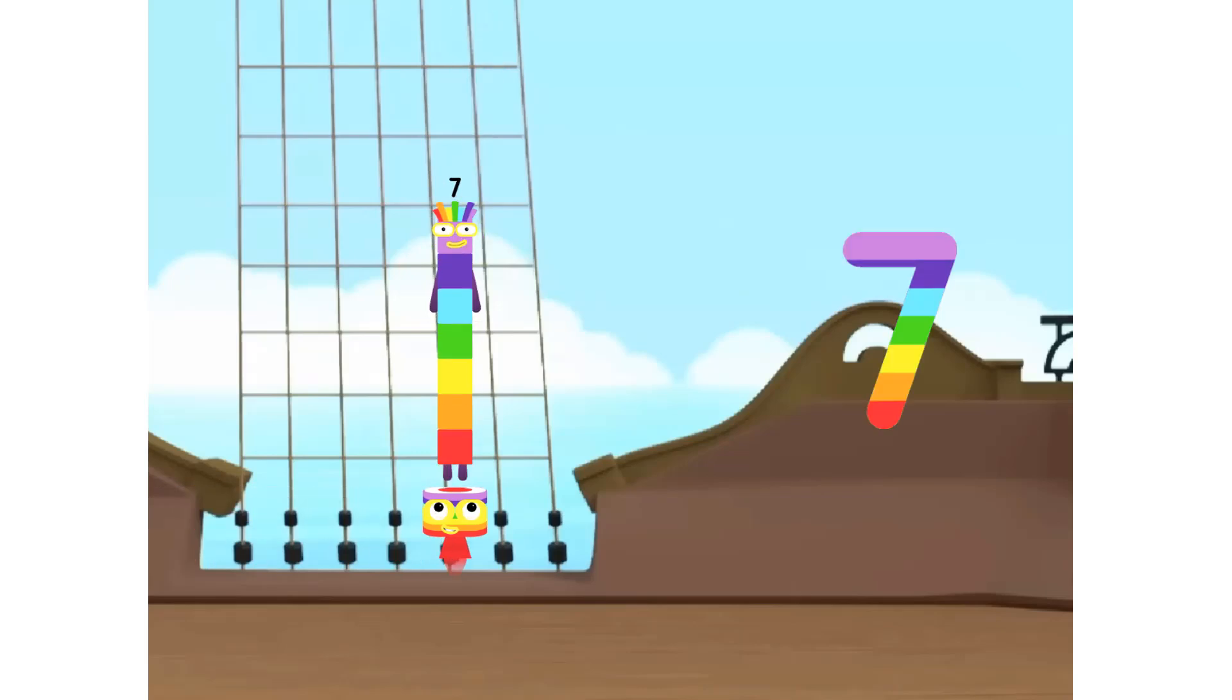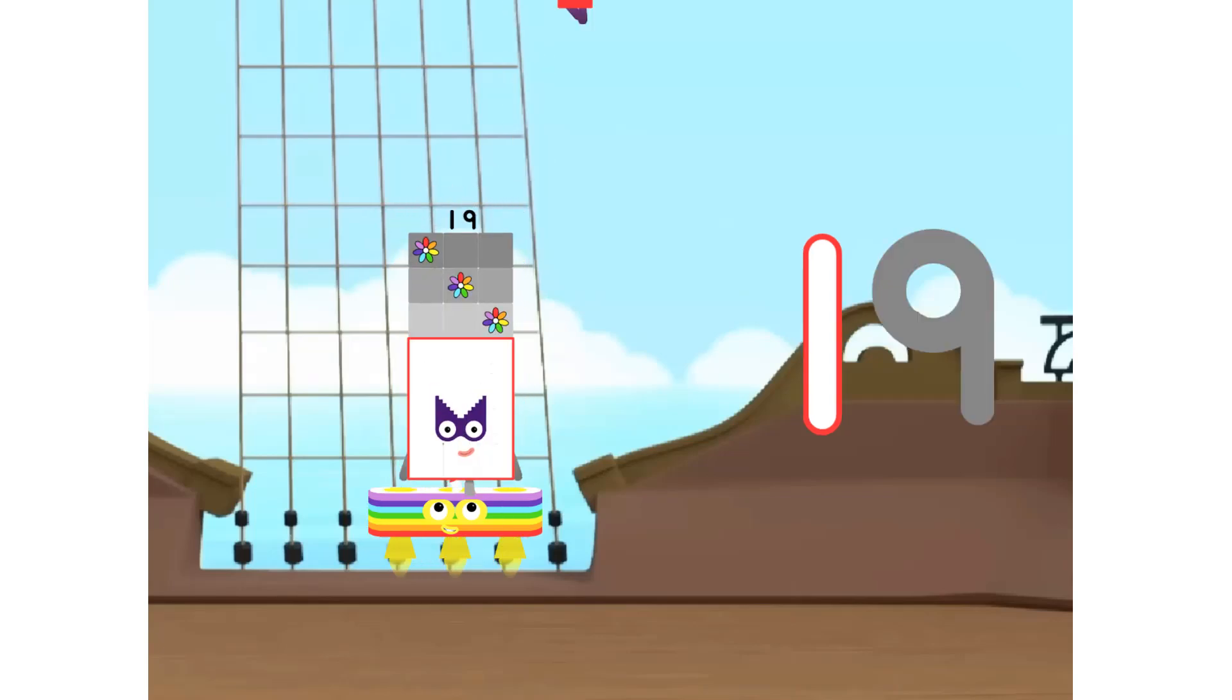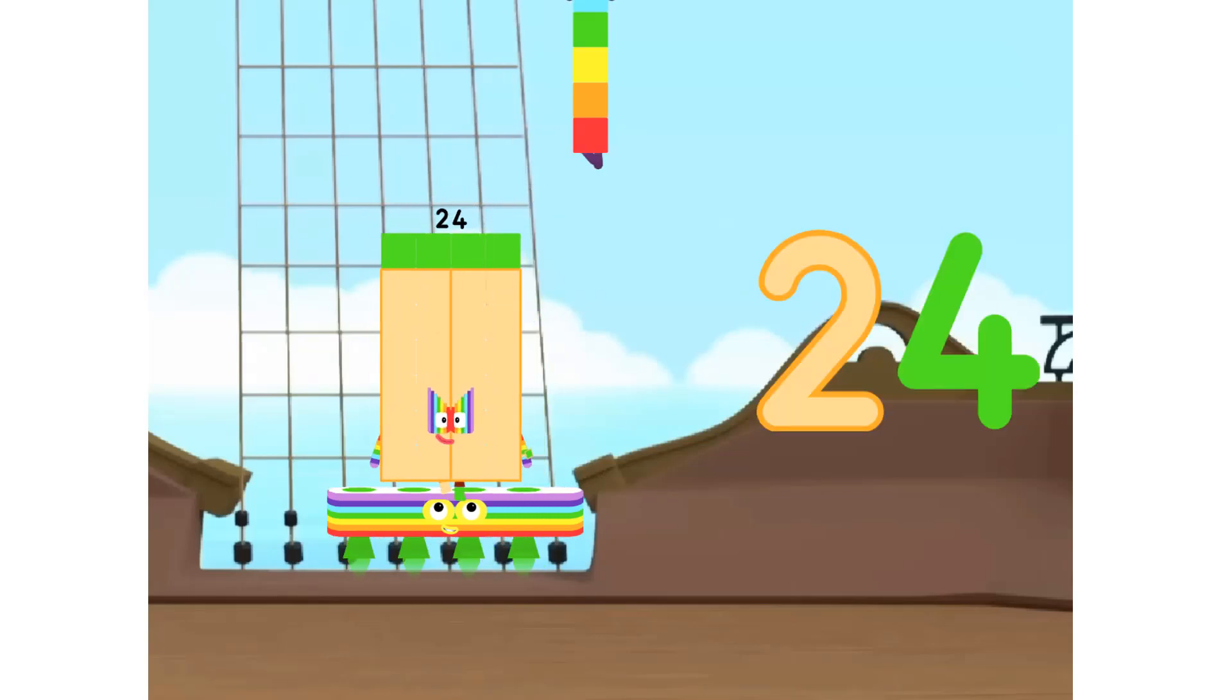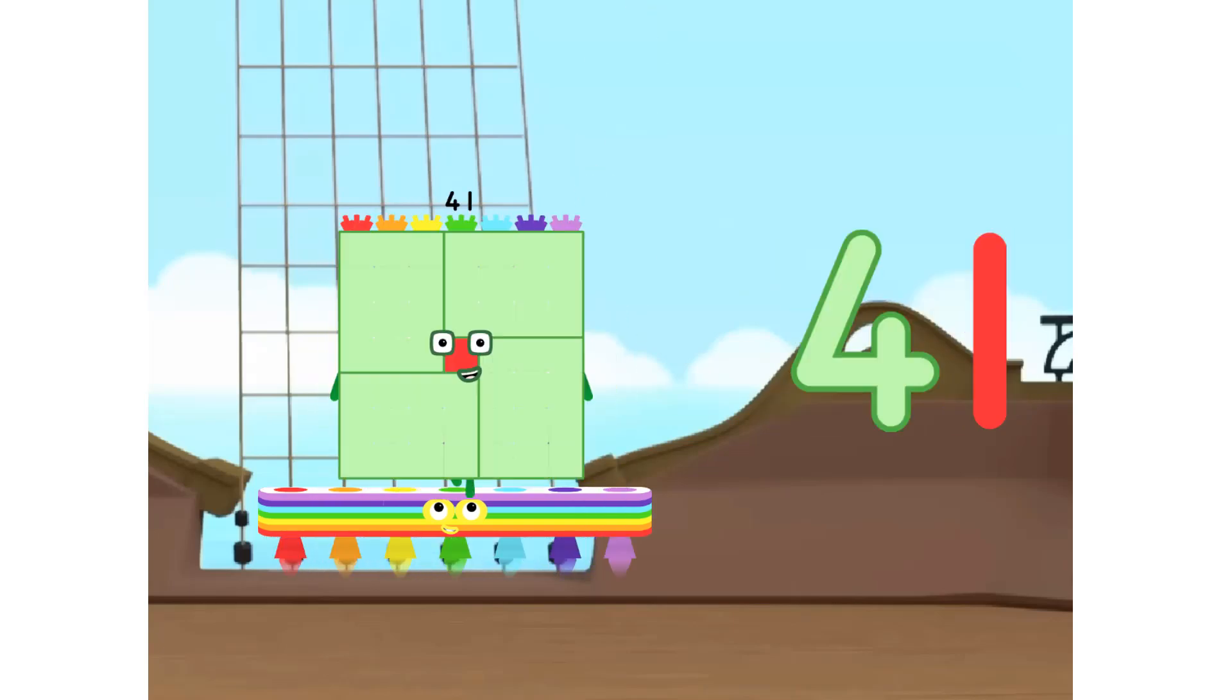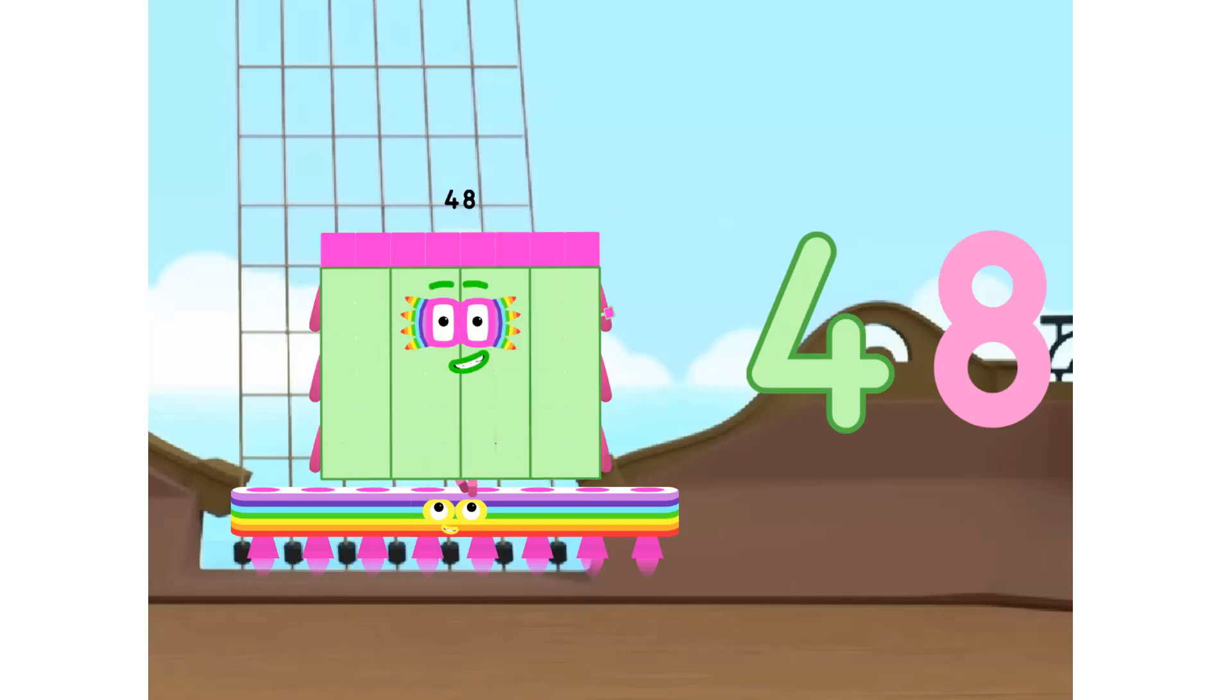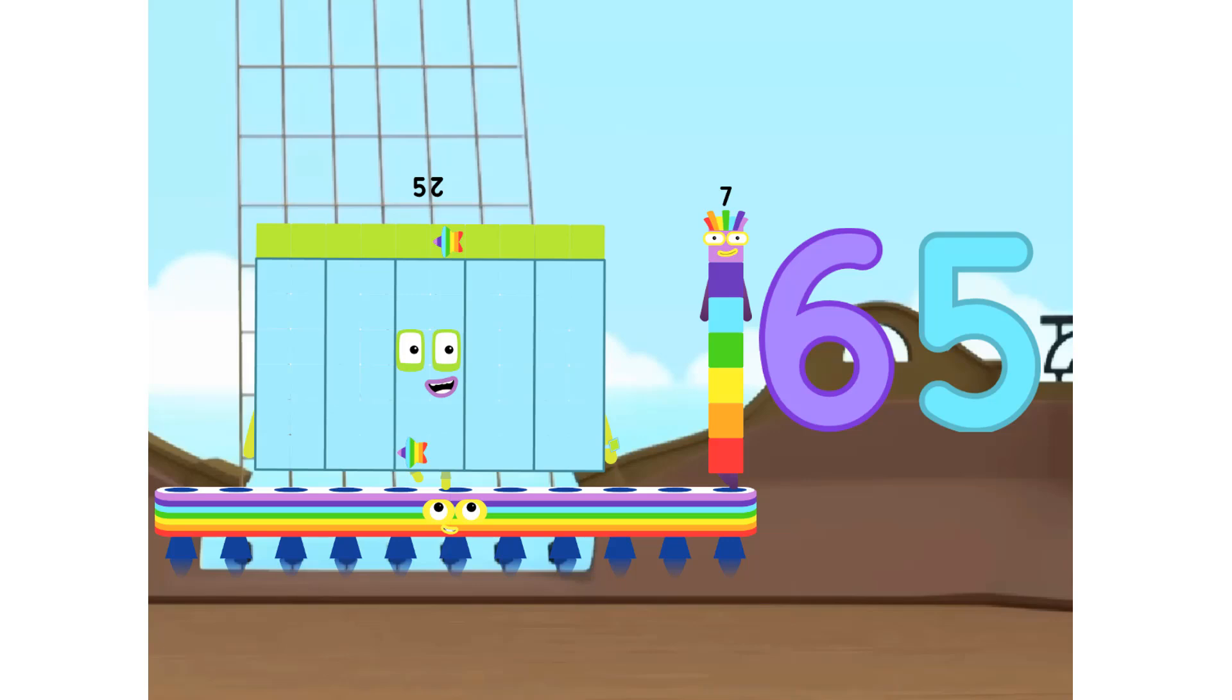1 seven is 7. 2 sevens are 14. 3 sevens are 21. 4 sevens are 28. 5 sevens are 35. 6 sevens are 42. 7 sevens are 49. 8 sevens are 56. 9 sevens are 63. 10 sevens are 70.